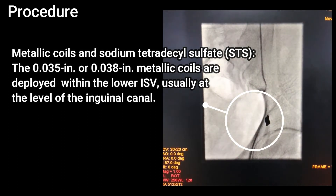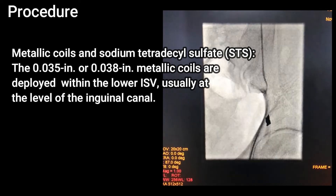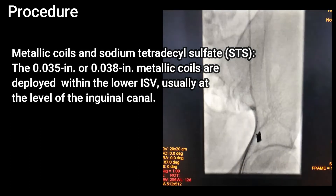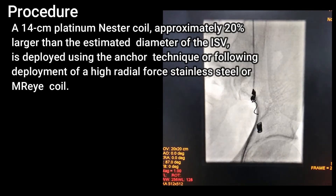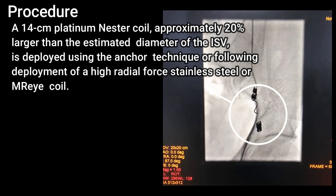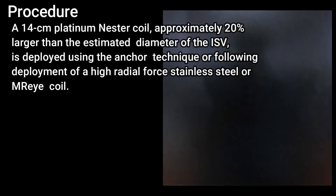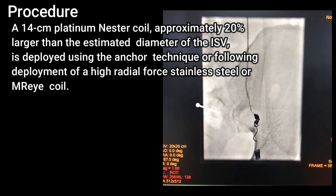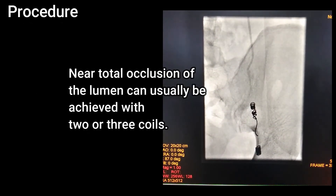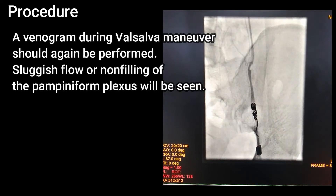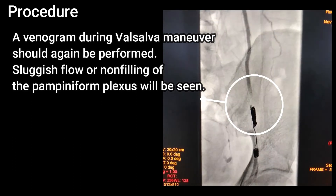In this procedure we use metallic coils and sodium tetradecyl sulfate. The 0.035-inch or 0.038-inch metallic coils are deployed within the lower ISV, usually at the level of the inguinal canal. A 14 cm platinum nester coil approximately 20% larger than the estimated diameter of the ISV is deployed using the anchor technique. Following deployment of a high radial force stainless steel or Murray coil, near-total occlusion of the lumen can usually be achieved with two or three coils. A venogram during Valsalva maneuver should again be performed; sluggish flow or non-filling of the pampiniform plexus will be seen.